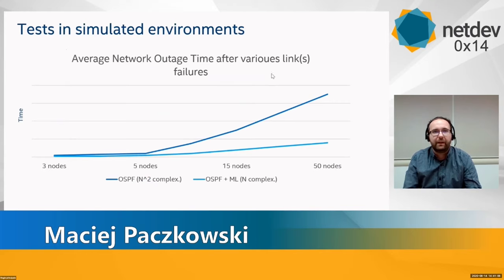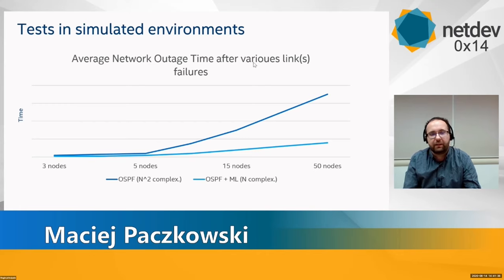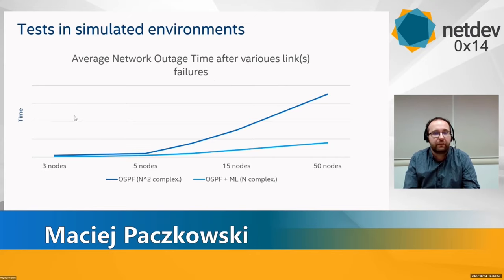On this slide we have a time chart based on our initial calculations and tests in fully simulated environments. We are able to reduce network outage time even three to four times in the case of 50-node networks. So apparently the temporary FIB calculated by artificial intelligence significantly decreases the outage time. And even if routing decisions based on it are not 100% accurate, they can decrease packet loss levels when the network state is not stable. We didn't put exact times on the scale since for different simulation environments these times are different. However, the shape of the chart and the node-time correlations are constant.